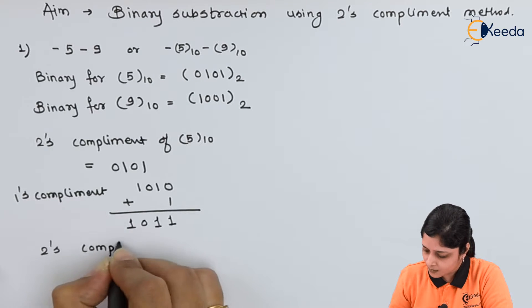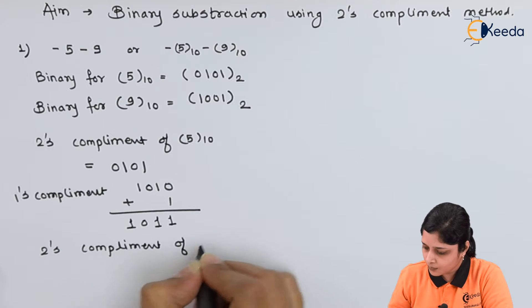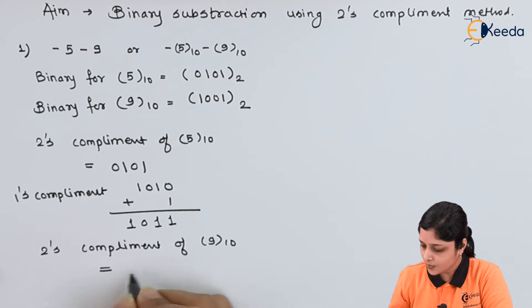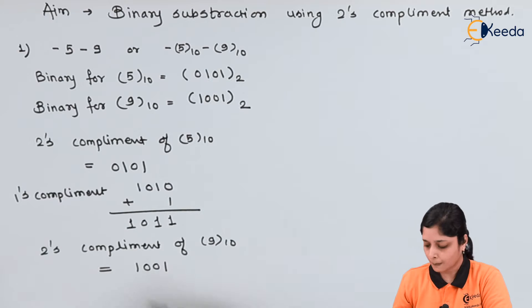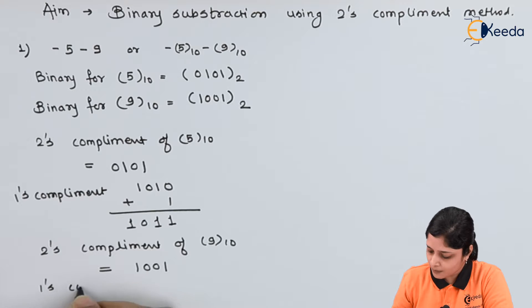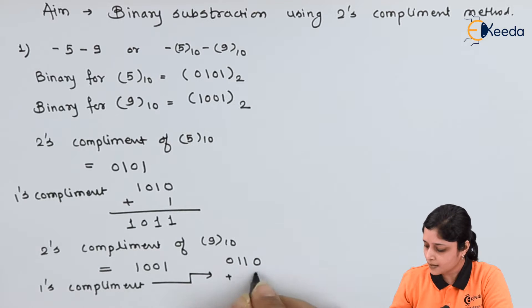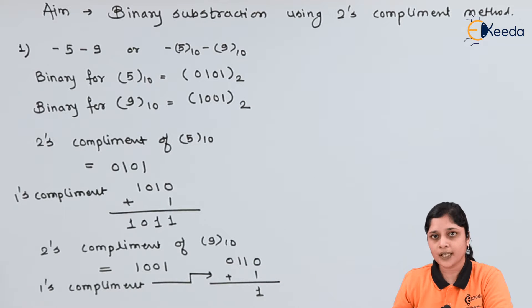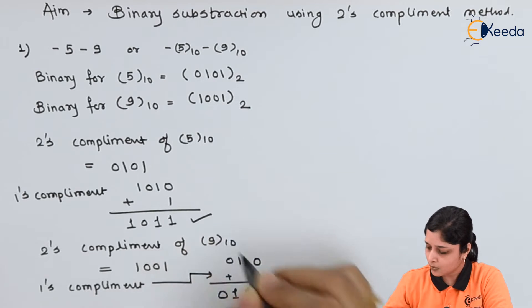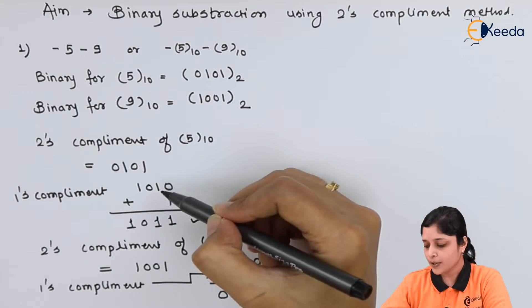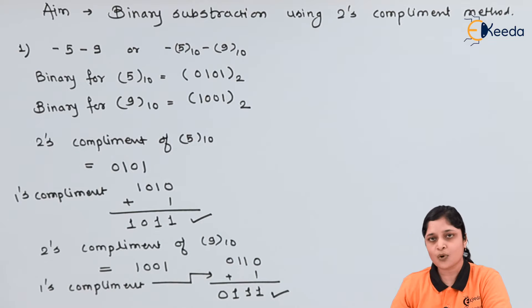Now 2's complement of 9. This is 1001, the binary for 9. Its 1's complement is 0110, plus 1. 0 plus 1 you will get 1, giving you 0111. So you got 2's complement of 5 and 2's complement of 9.